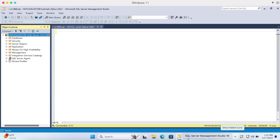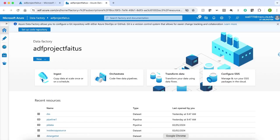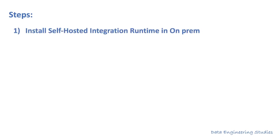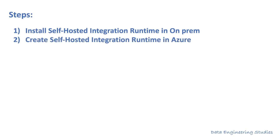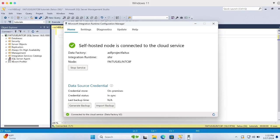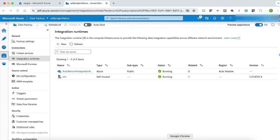I have my SQL Server which is up and running in Windows Operating System, and here is my Azure Data Factory for creating the pipeline. The first step is to install self-hosted integration runtime in the on-premises system, and the next step is to create a self-hosted integration runtime in Azure. I have explained in detail how to download the self-hosted integration runtime and establish the connection in my previous video, so I am skipping these two steps here. I will give the link in the description. Here is the self-hosted integration runtime software installed in the on-premises system, which is connected to the self-hosted integration runtime in Azure.